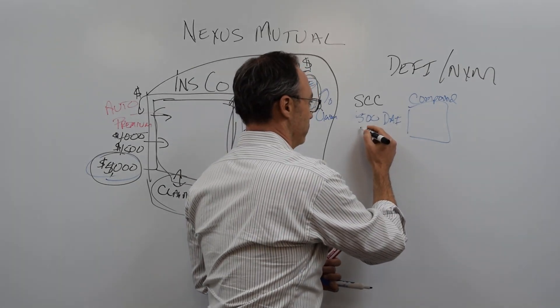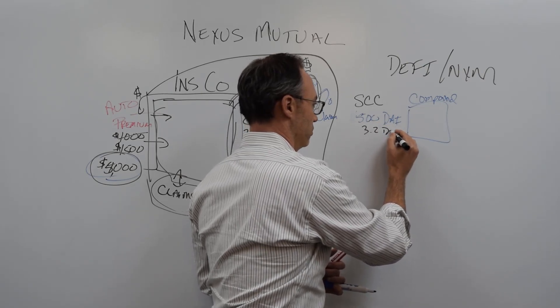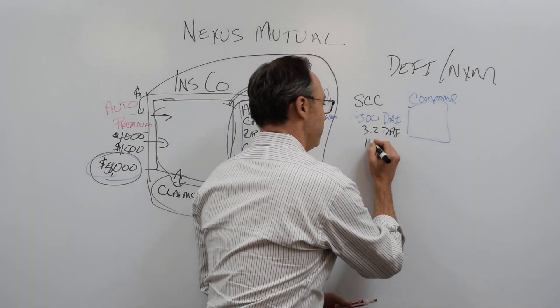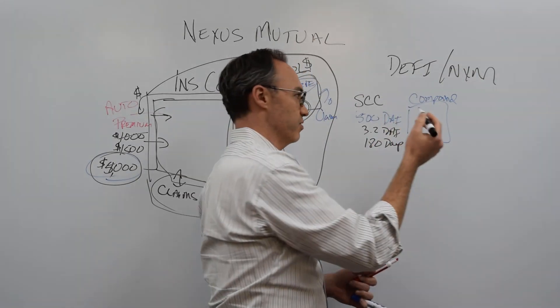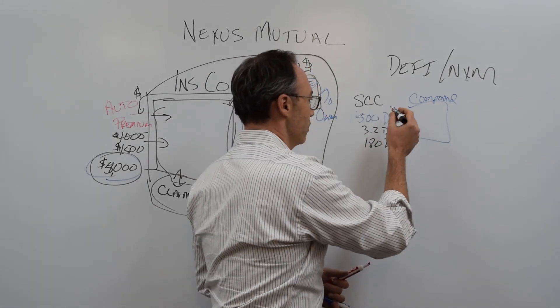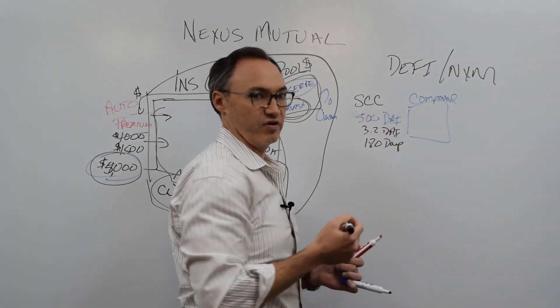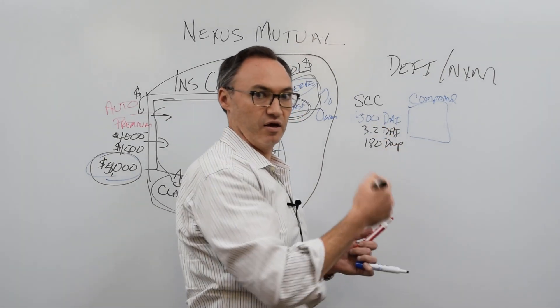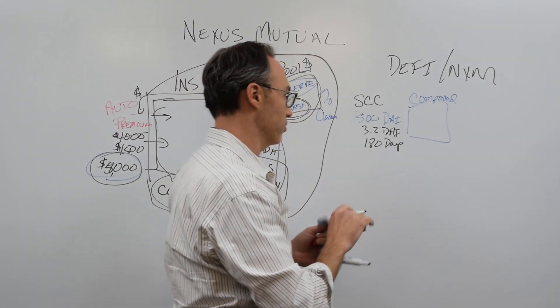So what I found out is I can buy smart contract coverage insurance from Nexus Mutual, and it costs me, to cover this 500 DAI, about 3.2 DAI, which I paid. Now in the next 180 days, if something happens and compound somehow gets hacked, someone finds a flaw in the smart contract code, whatever it might be, and I file a claim, I will receive my 500 DAI, assuming the claim is validated. I will receive 500 DAI back from the pool.